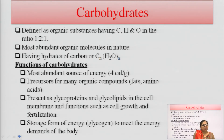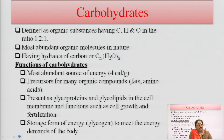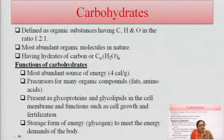The functions of carbohydrate: carbohydrate is the most abundant source of energy, giving 4 calories per gram. These are basically precursors of many organic compounds — the basic units for formation of fat and amino acids. Carbohydrates present as glycoprotein and glycolipids are major constituents of lipids and proteins, help in the formation of cell membrane, cell growth, and fertilization. The storage form of energy is glycogen — when glucose is in excess in the body, it is converted into glycogen by glycogenesis.